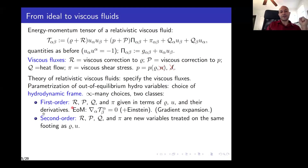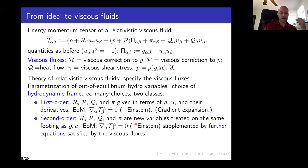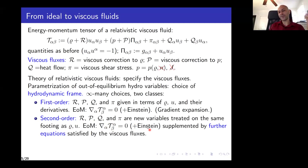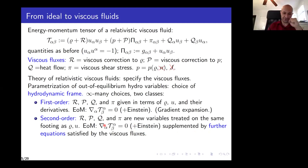Another choice leads to what are known as second-order theories. The basic philosophy is that you treat the viscous fluxes not as something given in terms of the hydrodynamic variables, but as new variables on the same footing as the density and velocity. The equations of motion are again the divergence of the energy-momentum tensor equal to zero, but now supplemented by further equations satisfied by the viscous fluxes. This makes sense from an accounting principle: you're introducing new variables, so you need new equations of motion. The underlying philosophy here is that of the method of moments.